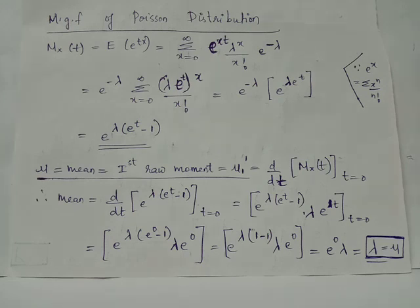Therefore the mean of Poisson distribution is mu equals lambda.